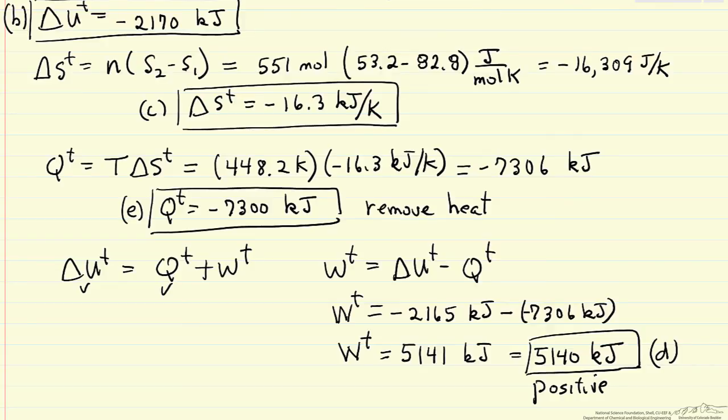We've now calculated the work and heat for a reversible process, so it's important to emphasize that we assumed this was reversible in order to calculate the work and heat. Otherwise we need more information. The other thing to point out, when we have a non-ideal gas, modeling it with the Peng-Robinson equation of state, delta u is not zero for an isothermal process.